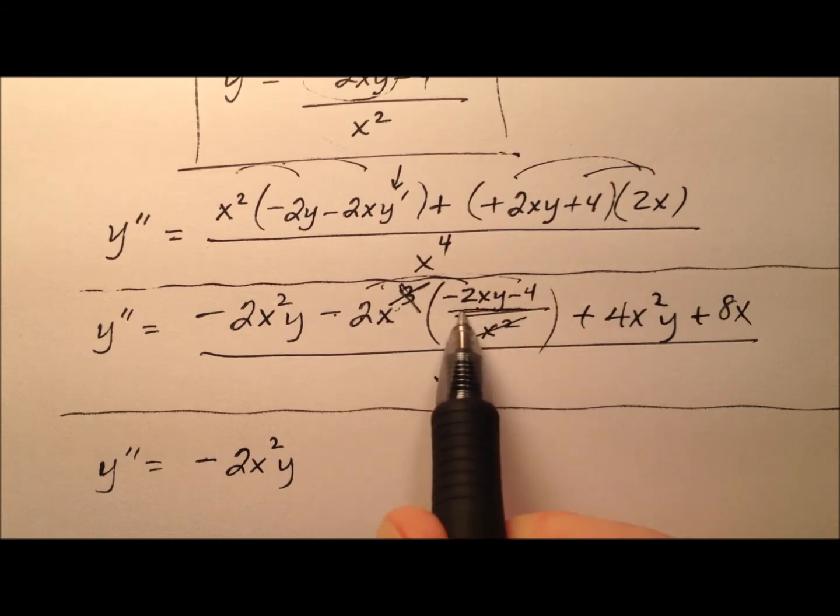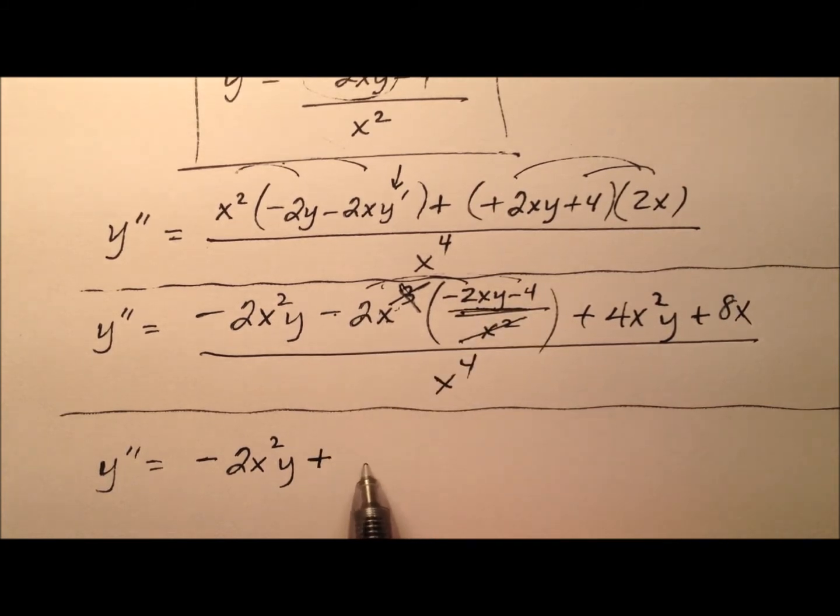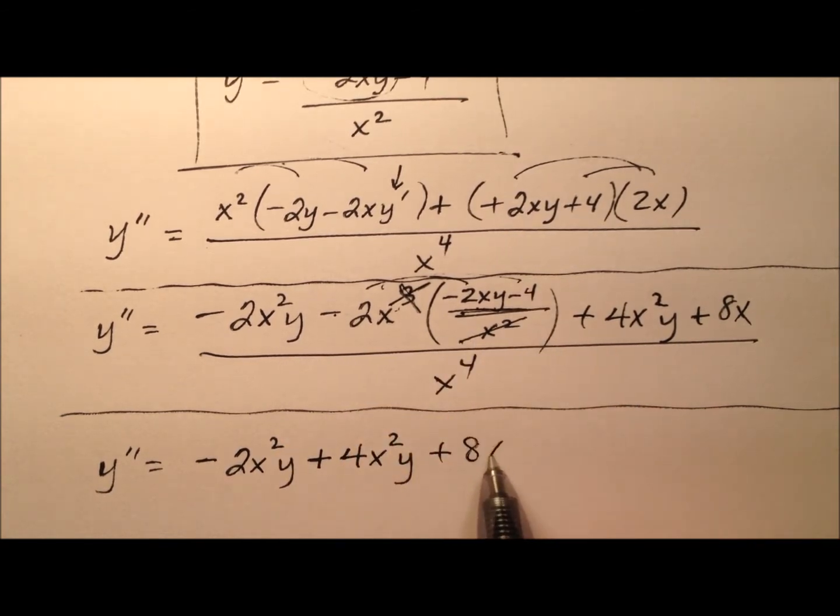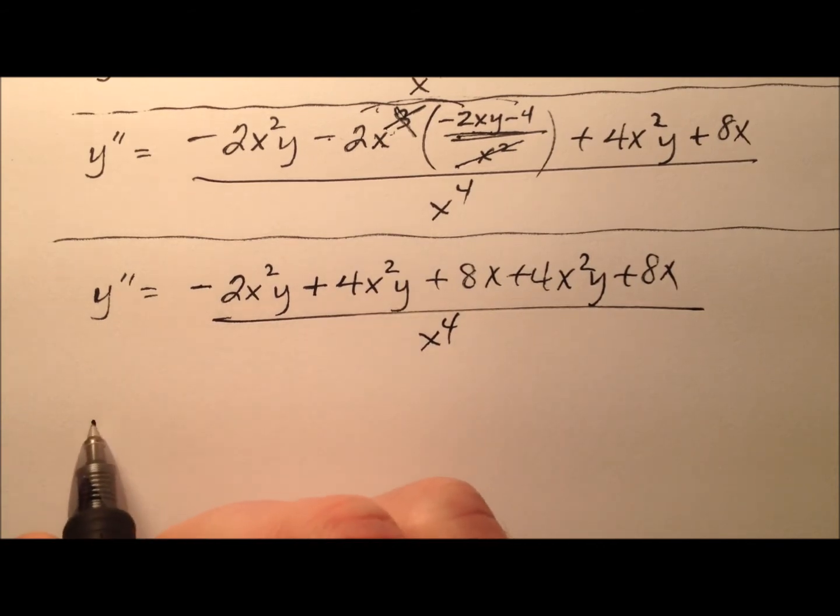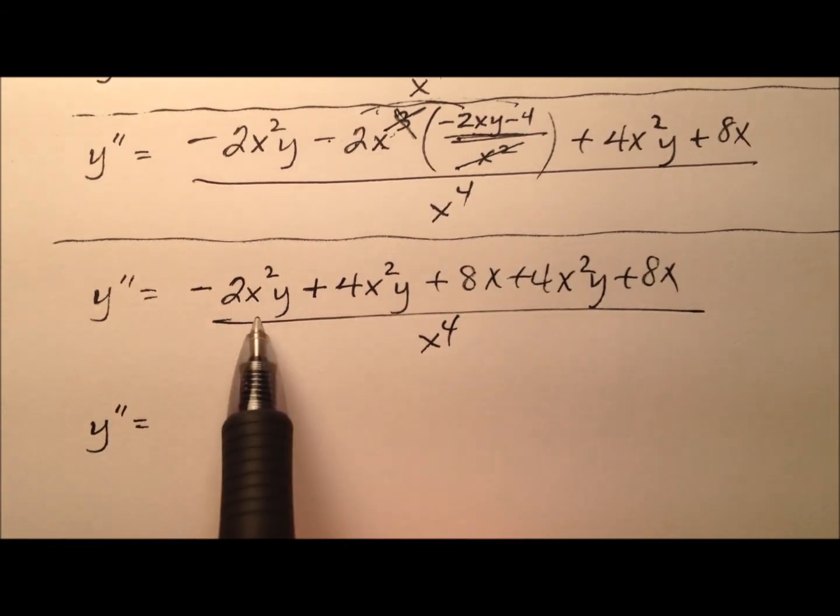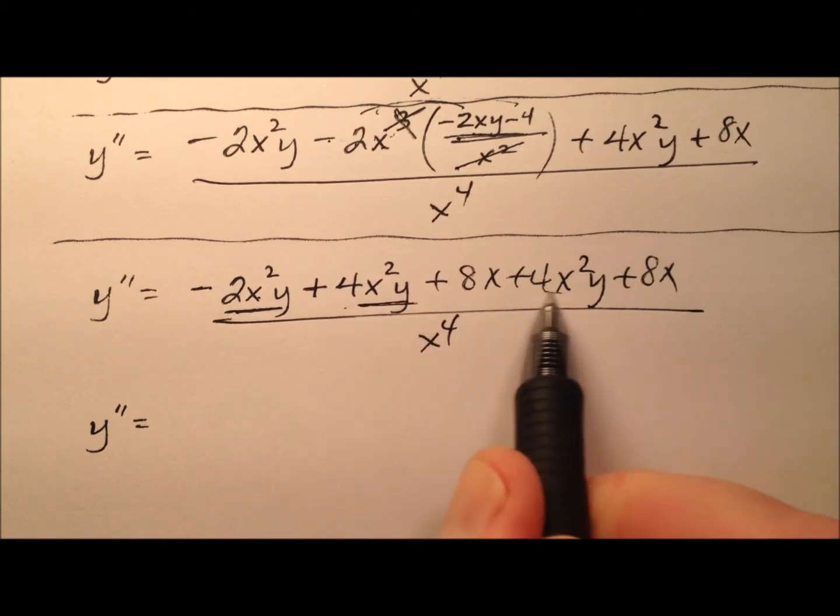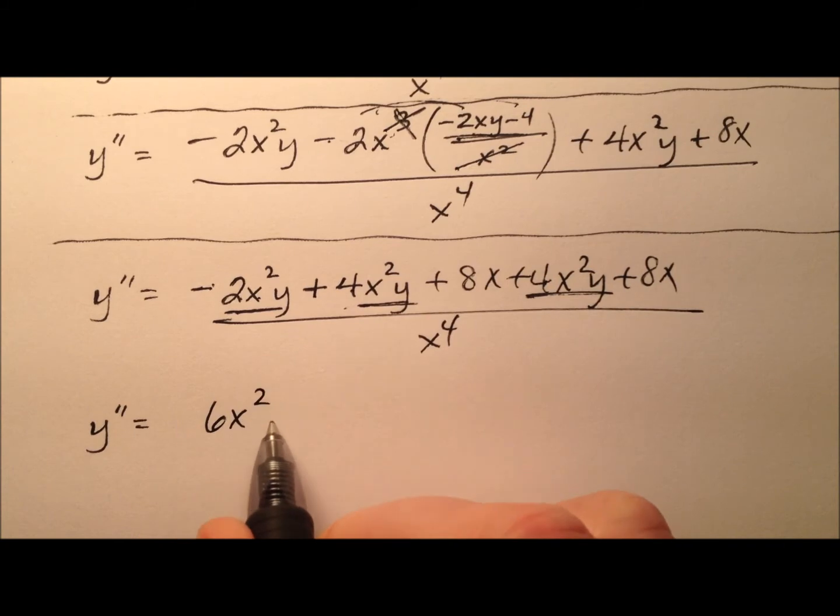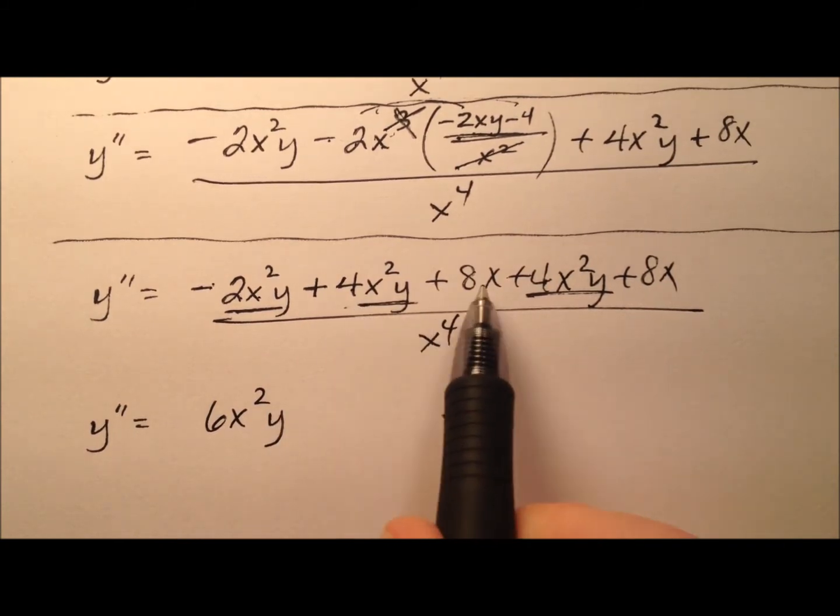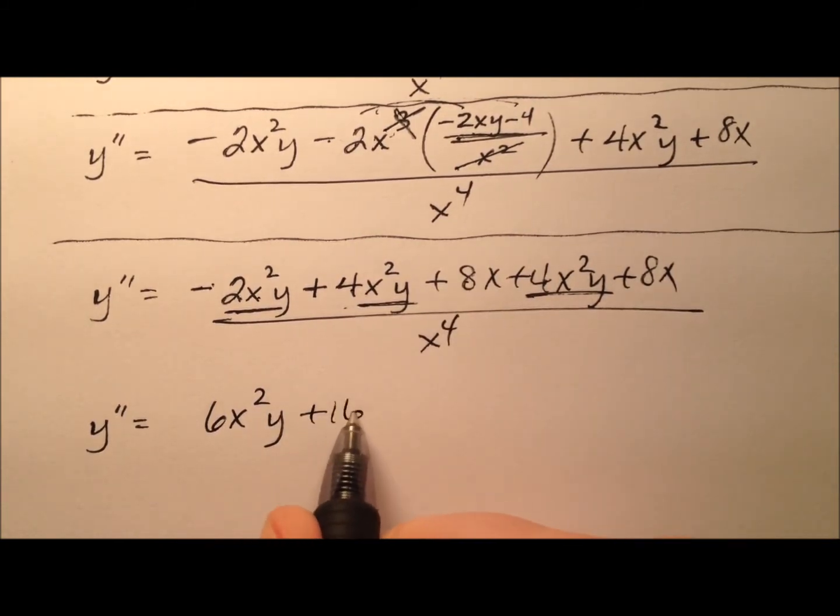So it'll be plus 4x squared y plus 8x plus 4x squared y plus 8x, all over x to the fourth. So a lot of like terms here. The x squared y happens here and here and here. We have negative 2 plus 4 is 2 plus 4 is 6, so 6x squared y. And then we have 8x and 8x, so plus 16x, all over x to the fourth.